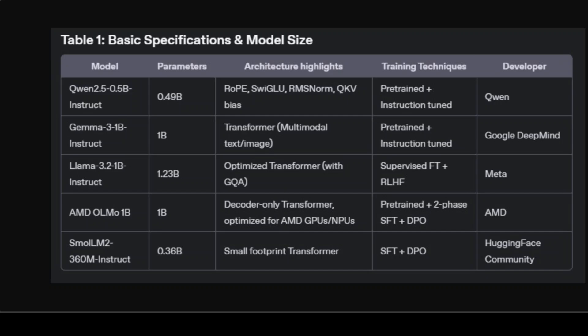All of the models I'm going to mention have already been covered on the channel in great detail. The models I have selected are Alibaba's Qwen, Google's Gemma, Meta's Llama — not the recent Llama 4 but Llama 3.2 — AMD's OLMo, and Hugging Face's SmallLM2. There are many other models and I will compare them too, but from the user's perspective and use case perspective, these are among the best sub-1 billion parameter models available right now.